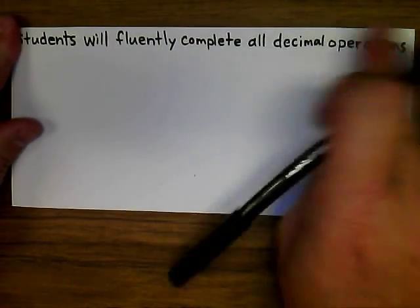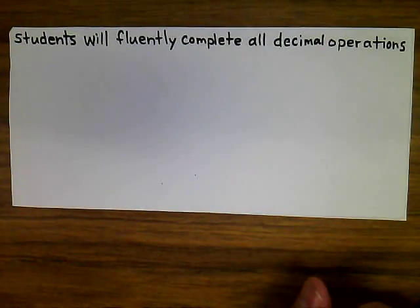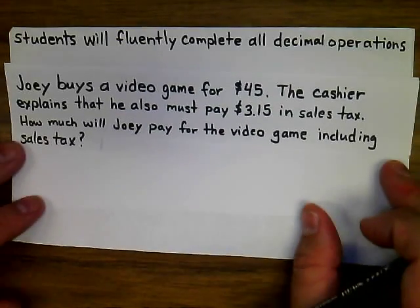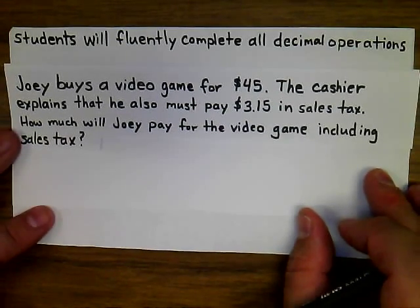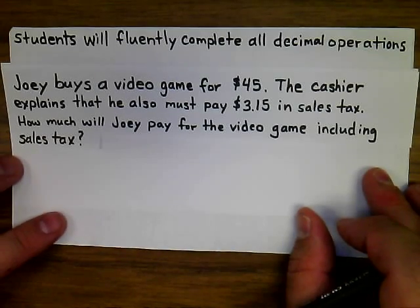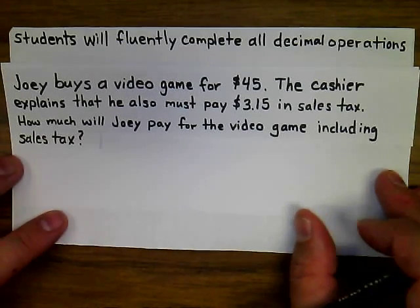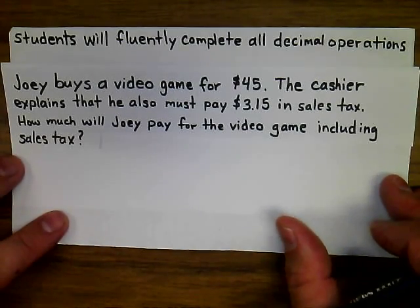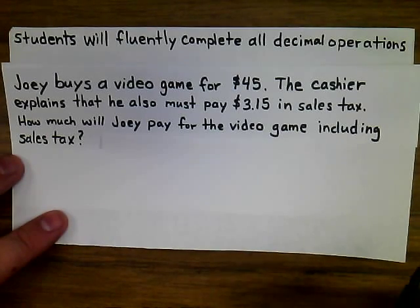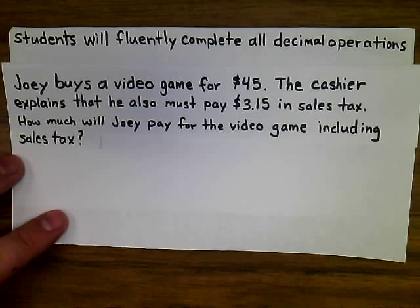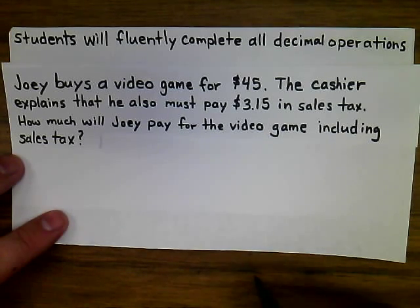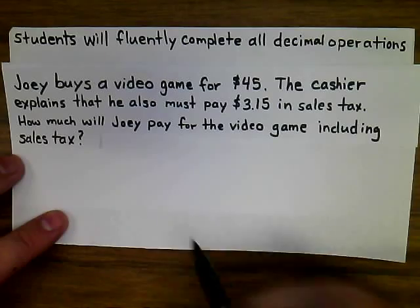We also want to make sure we can fluently complete all decimal operations. Joey buys a video game for $45, and the cashier explains he must also pay $3.15 in sales tax. How much will Joey pay for the video game including sales tax? We need to add these, and the key process for adding or subtracting decimal numbers is to line up the decimal point.